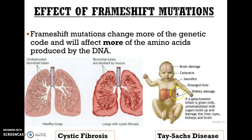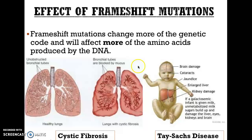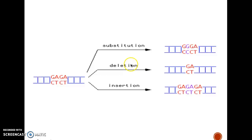The effects of frameshift mutations can be very, very harmful. When you change amino acids in a protein, the protein will not do the job it is meant to do. Diseases like cystic fibrosis and Tay-Sachs disease are syndromes that can be caused by frameshift mutations. If we have to rank them, deletions and insertions can be a lot more dangerous most of the time than substitutions are.